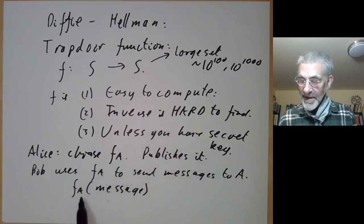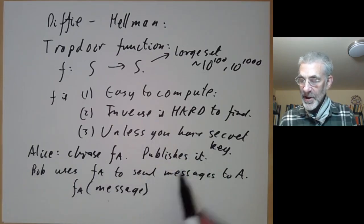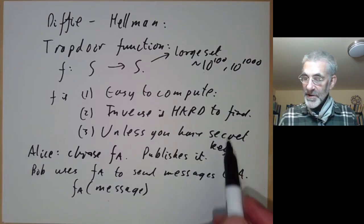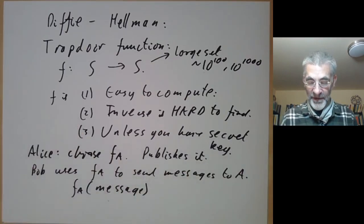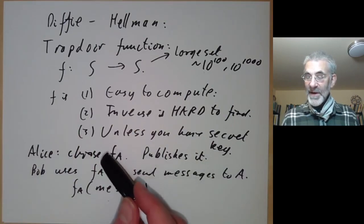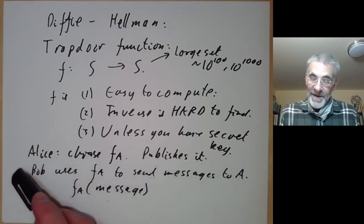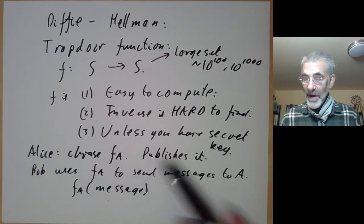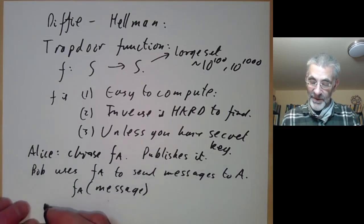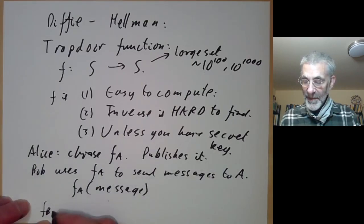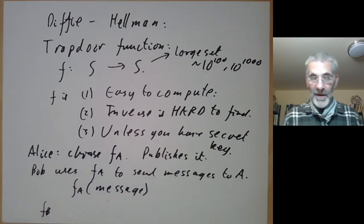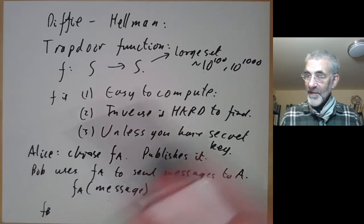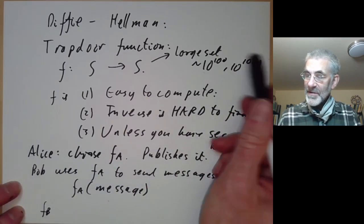On the other hand, Alice can invert it and find the message because she's got the secret key that allows you to invert the function f. Alice sends secret messages to Bob in the same way: Bob chooses Bob's trapdoor function f_B and publishes it. Eve is then stuck unless they have a computer that can sort through 10 to the 1000 cases or something.